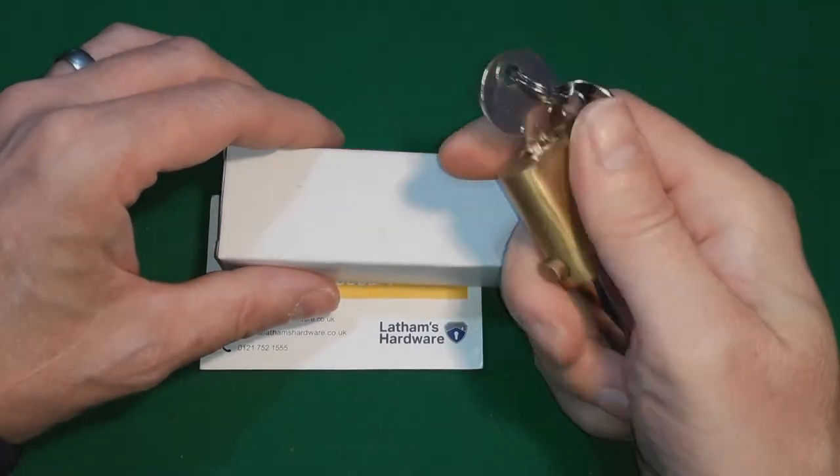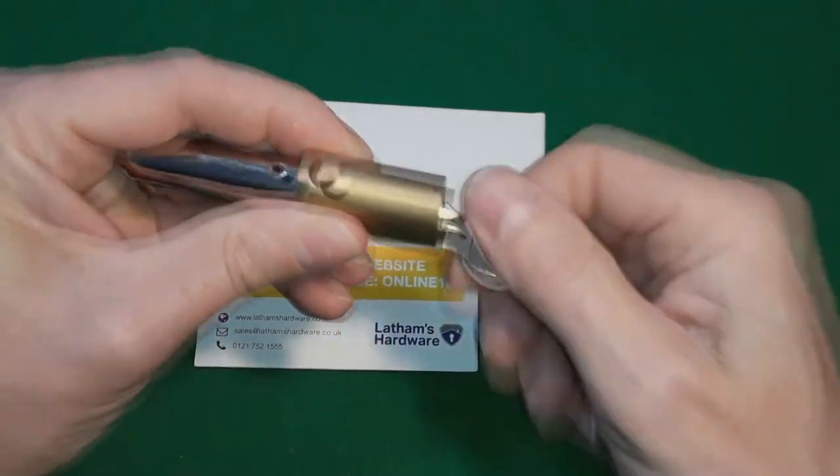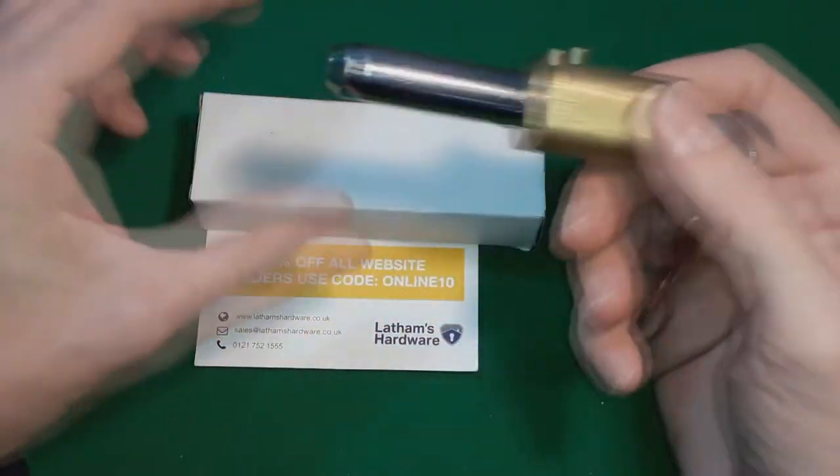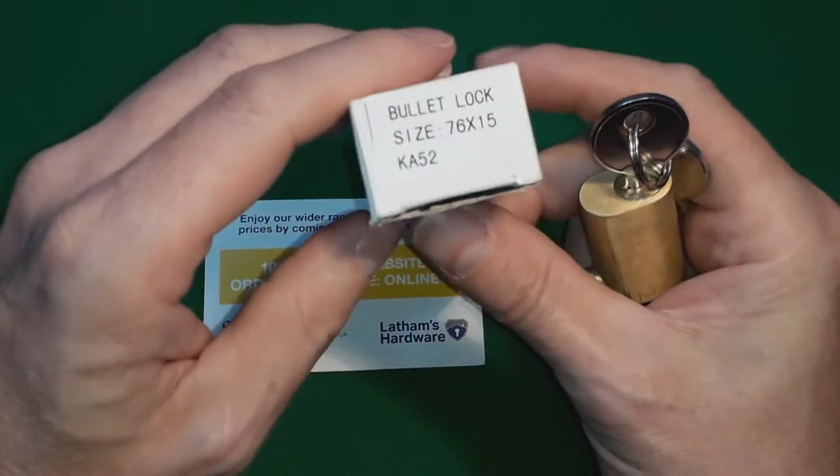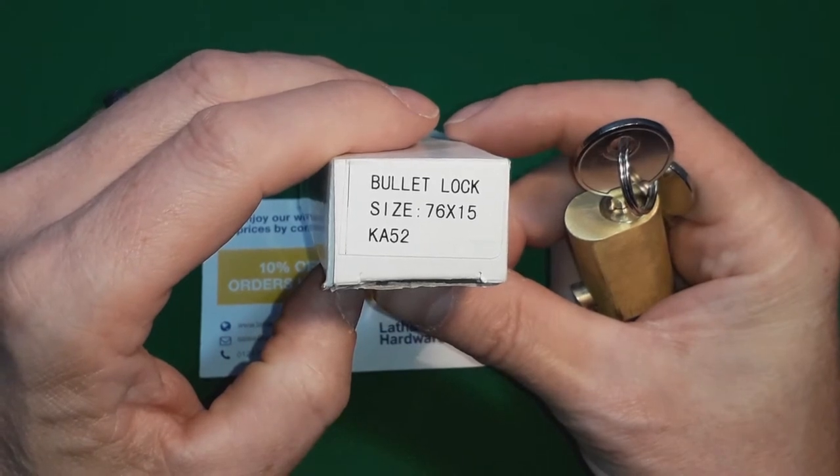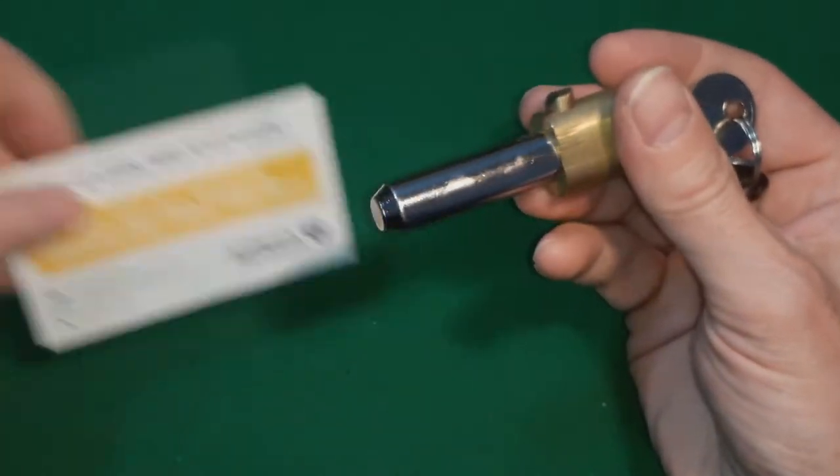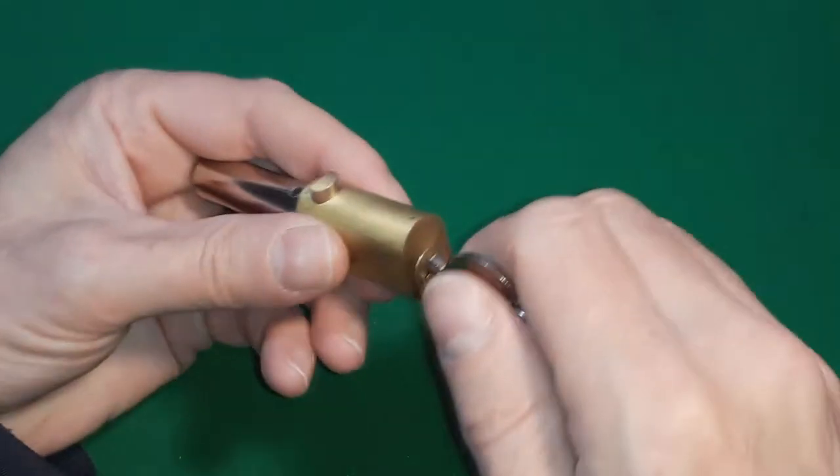Hello, well, I thought it'd be a good idea to attack the second bullet lock by Leitham's. And this one is the Ka52, it's a 76 by 15. So I thought we'd have a little go of this one.